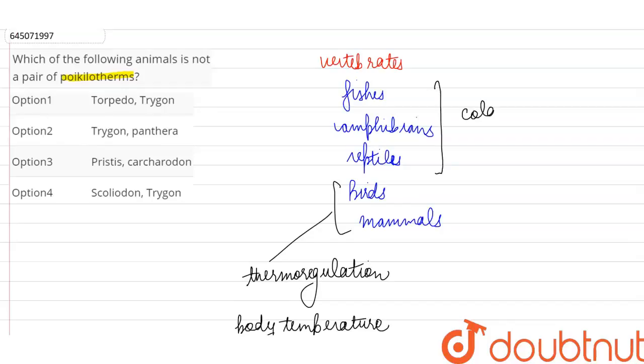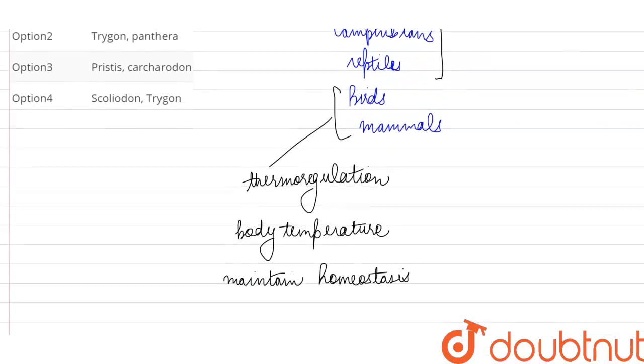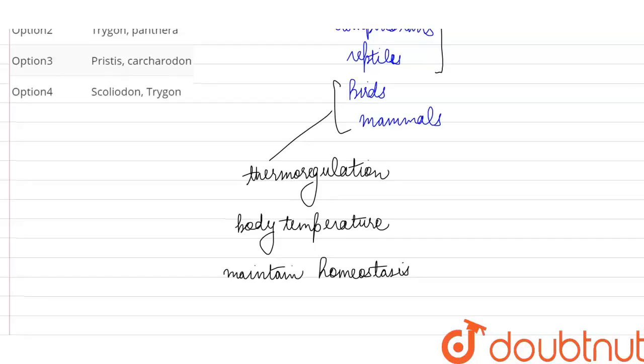...that their body temperature changes according to the ambient temperature. So we call them the cold-blooded or poikilothermic animals, whereas on the other hand, the birds and mammals are called warm-blooded.